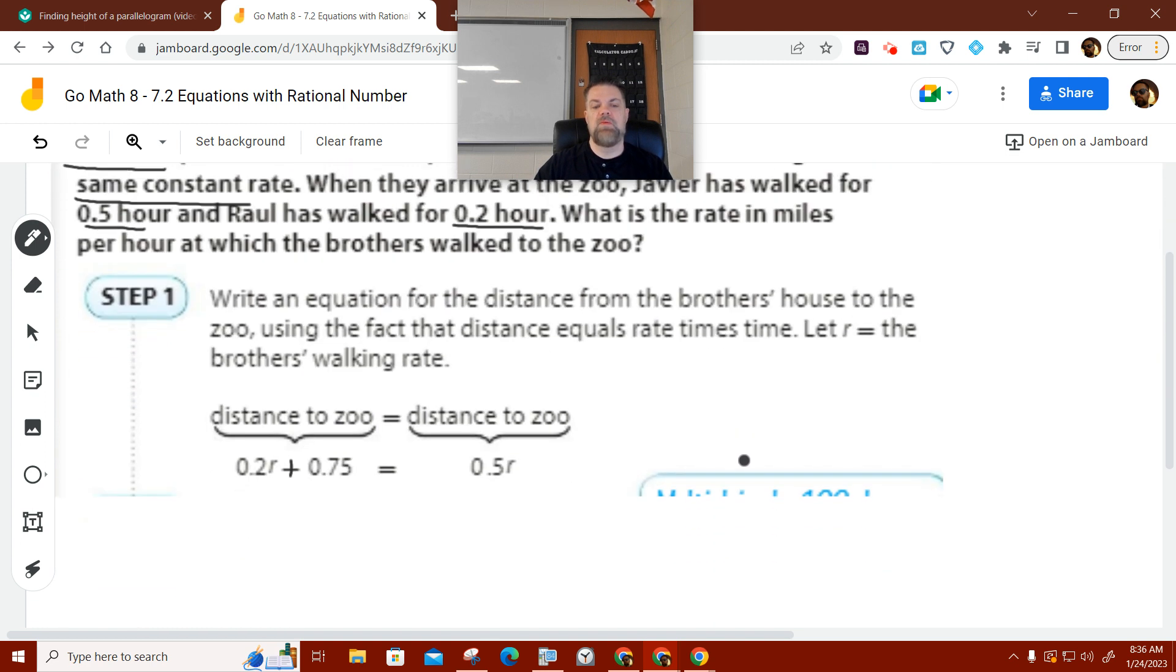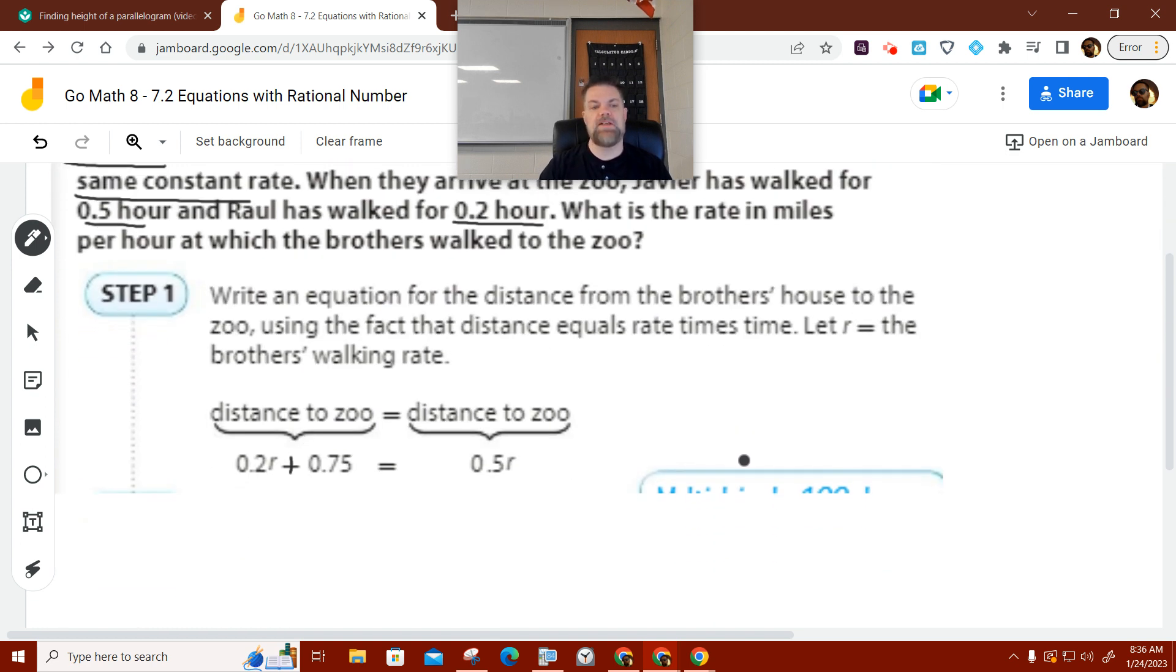So what they're saying is they both walk the same distance. One person walked part of the way, then stopped. And then the other brother walked faster and they met up at the zoo at the same time. I think that's what this means. And then they want to know what was the rate.